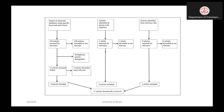The first and most important source is electronic databases. The electronic databases may be Scopus Index, Web of Science Index, and Google Scholar. These are electronic databases available for the collection of research articles.